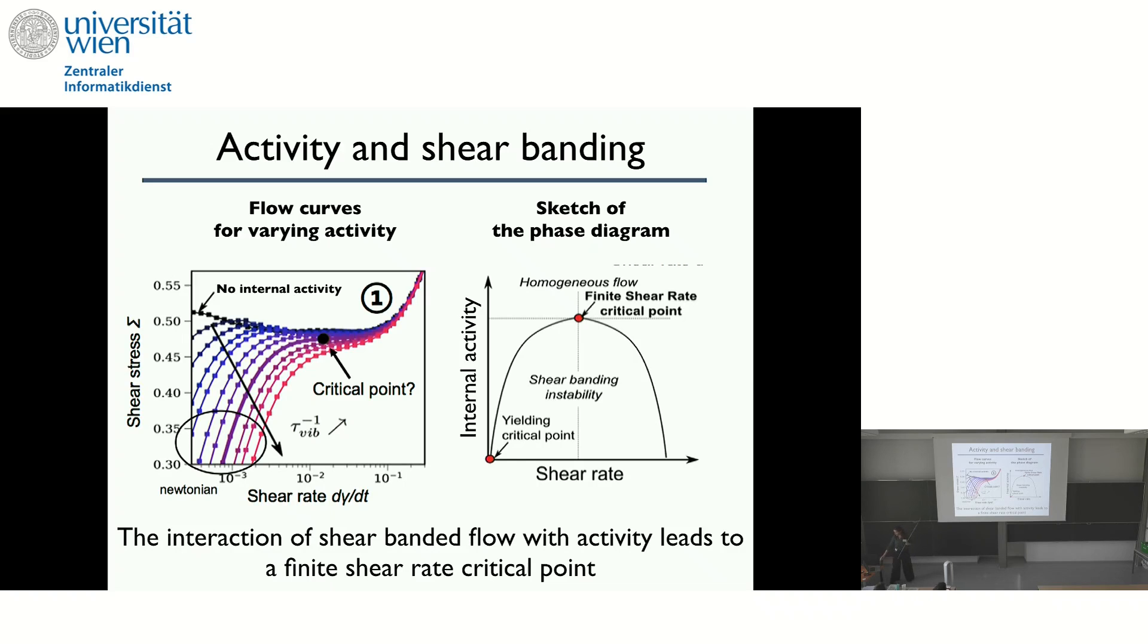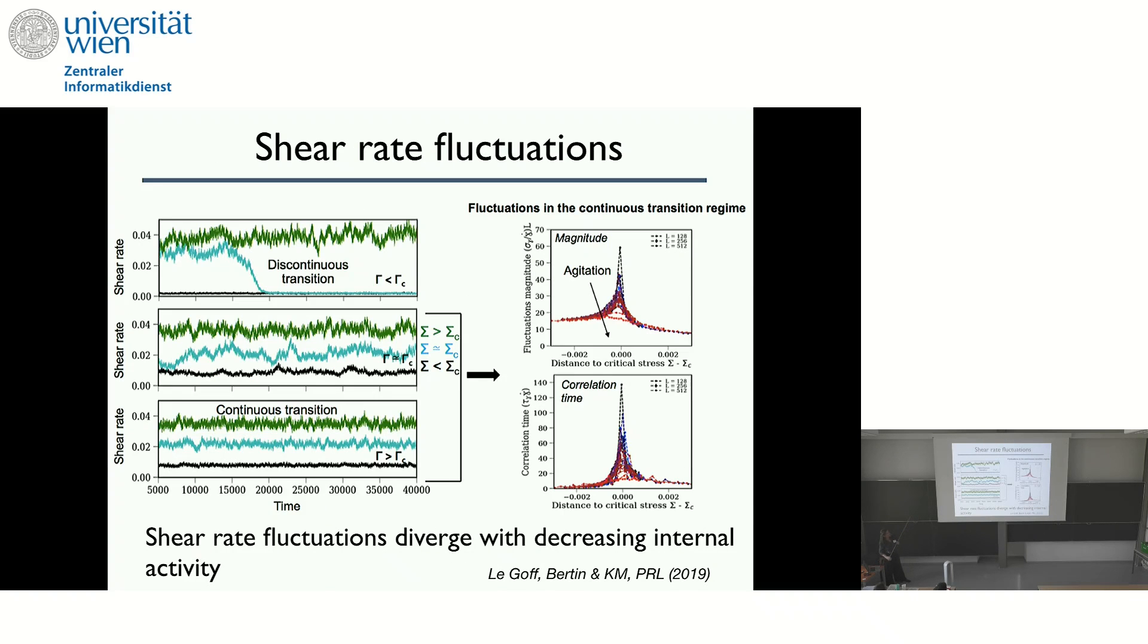And so to do so, you can do your simulations close to the critical point. And so you see here, this is a simulation very close to the critical point at the right rate of inducing new events. And you see that the fluctuation of rates here also diverges at the critical point together with the correlation time. The shear rate fluctuation diverge with decreasing internal activity. And we wondered whether this could be also a possible source of strong fluctuation in biological systems. So if you have an example, it would be very interesting.